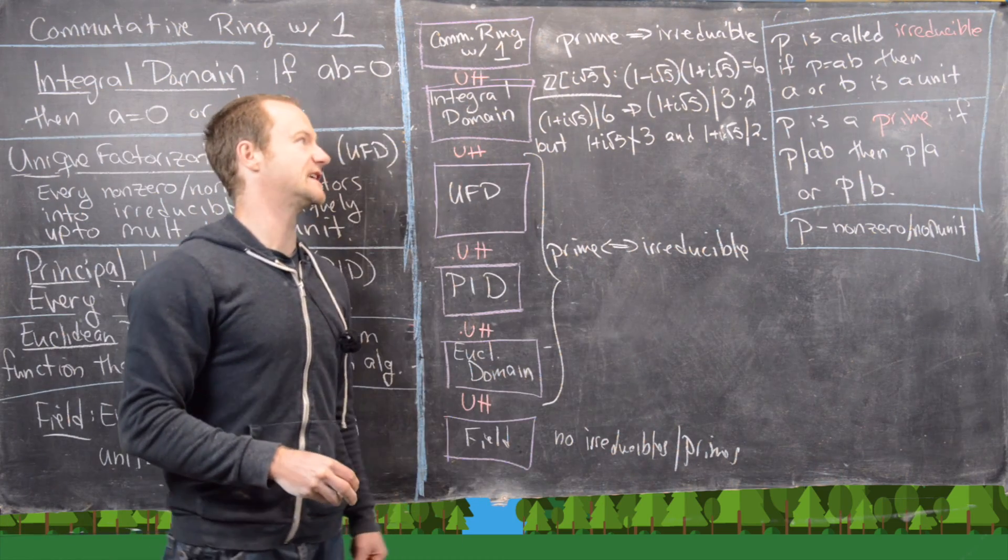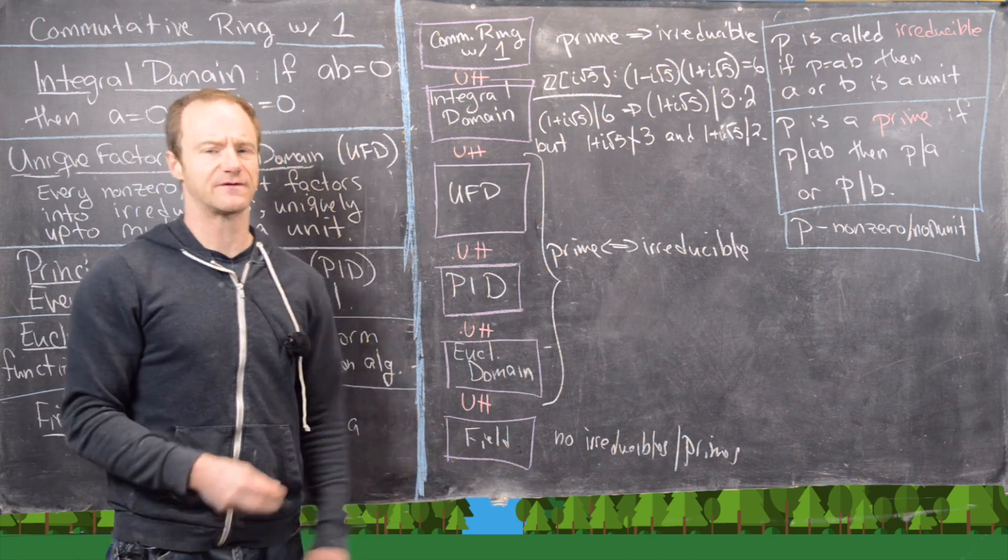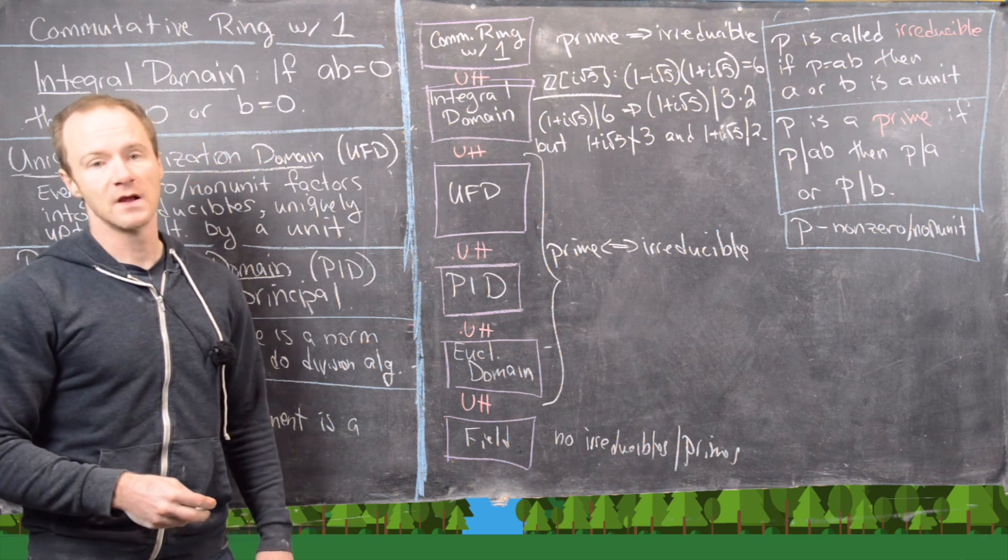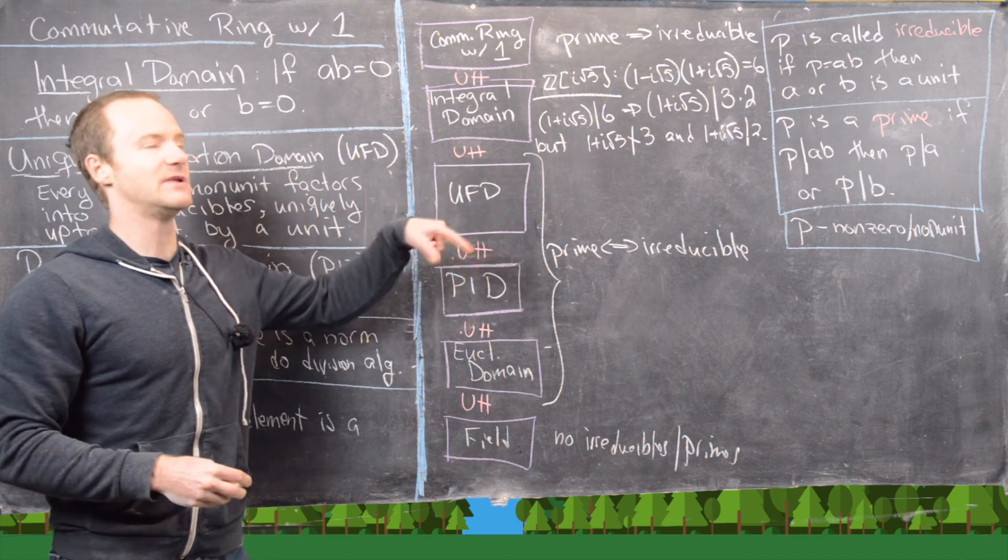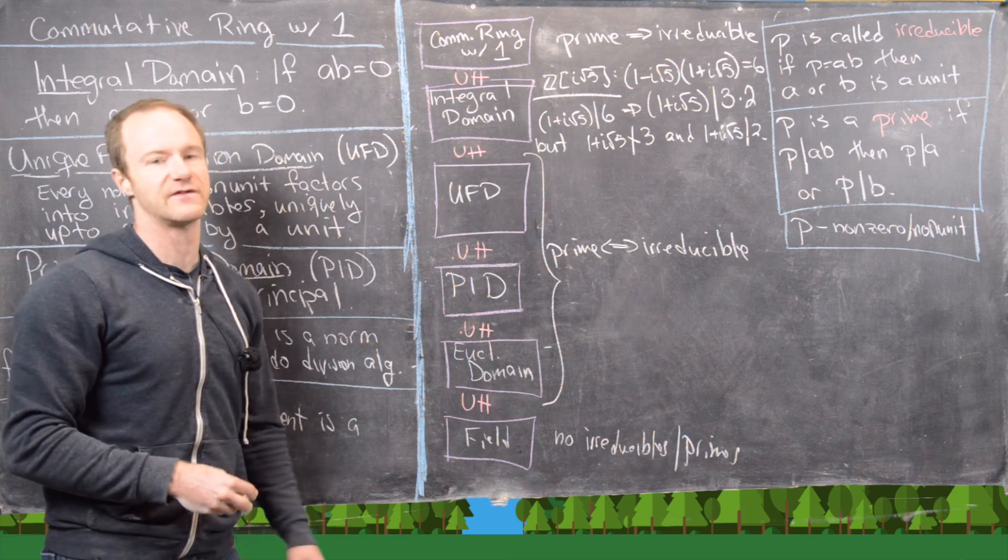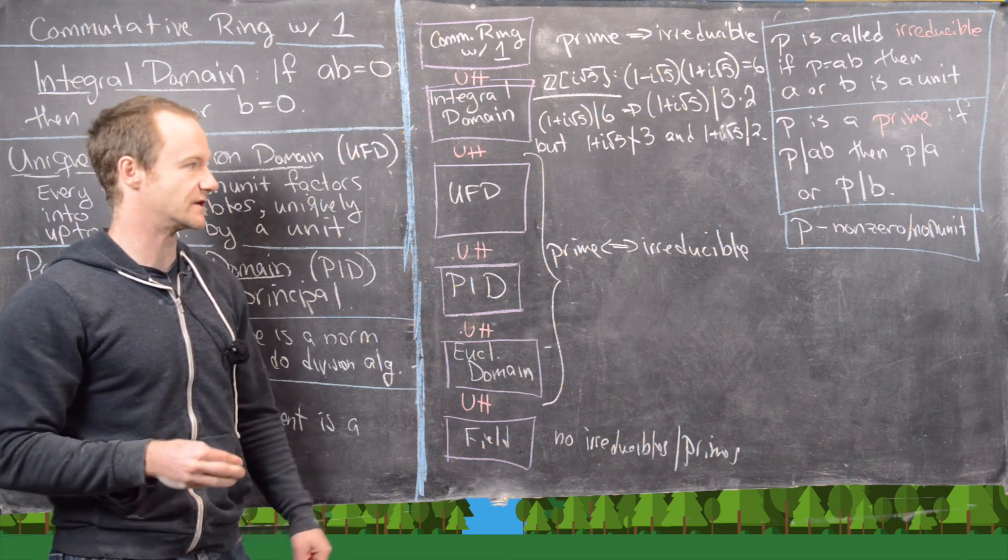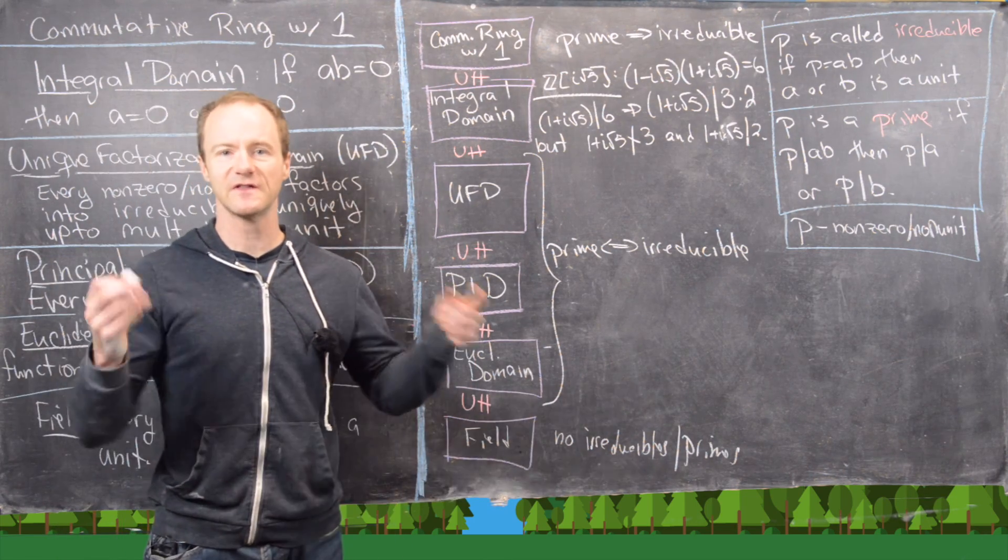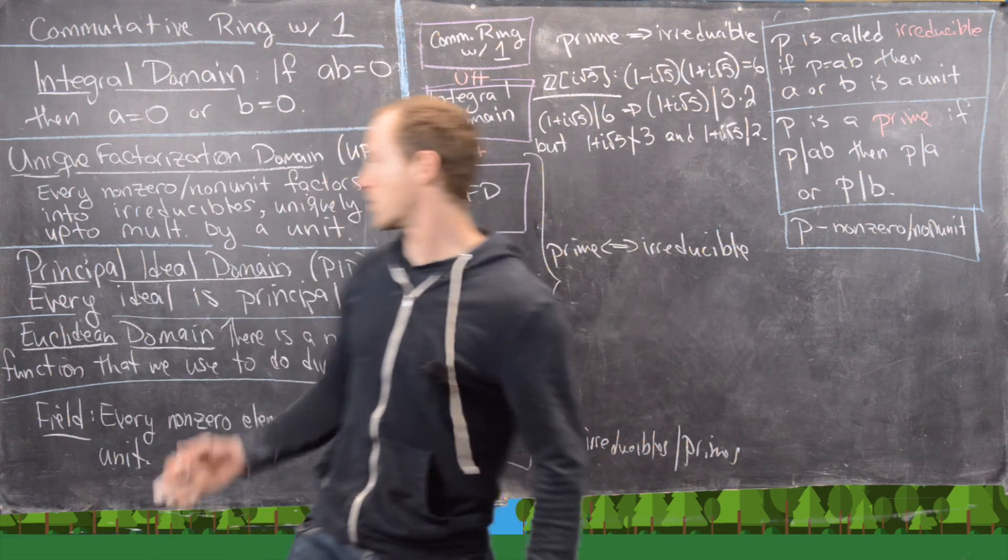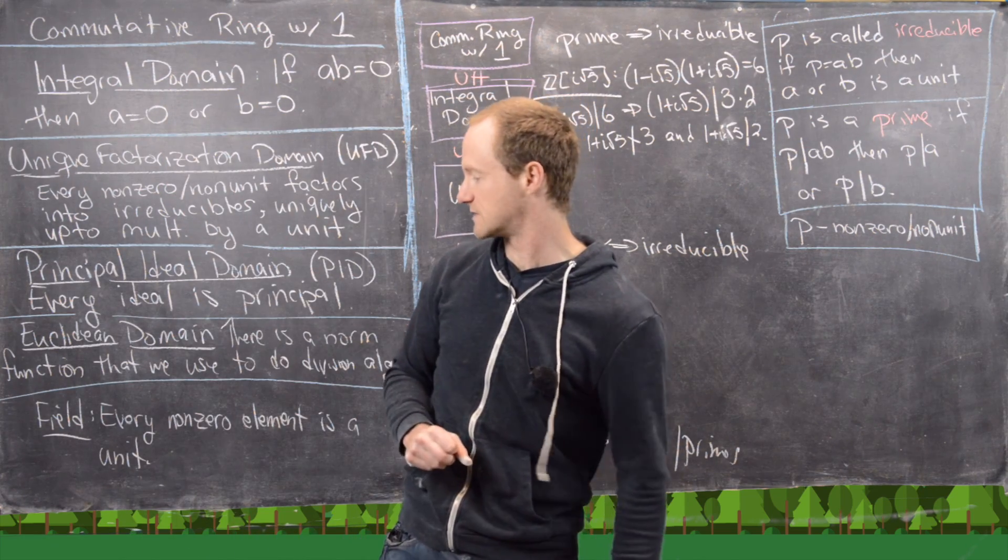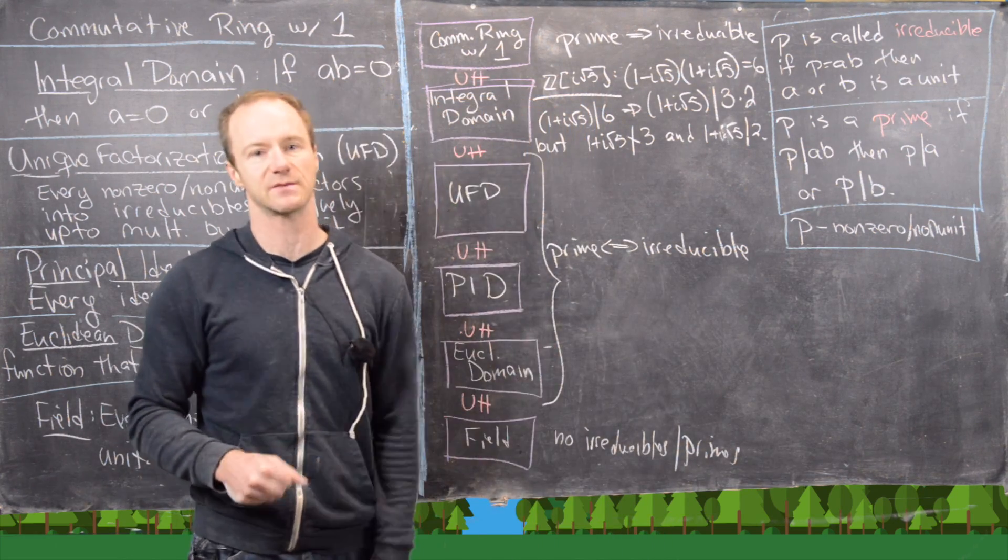So this actually just shows that it's not prime. You can actually further check that it's irreducible. And we did that maybe not for this exact example but for some very similar examples in previous videos. So I think this was a nice summary of the properties of all of these different types of commutative rings with one. And that's a good place to end this video.